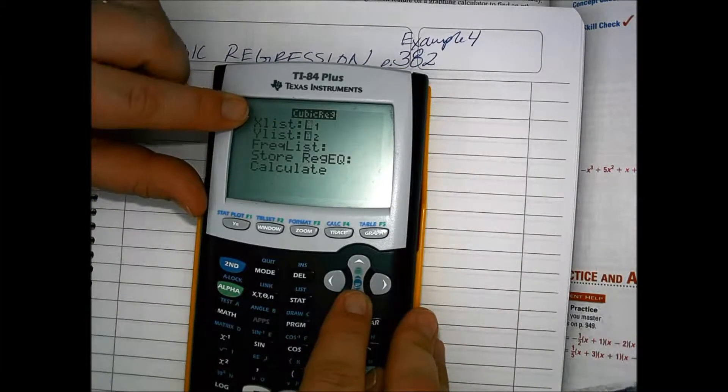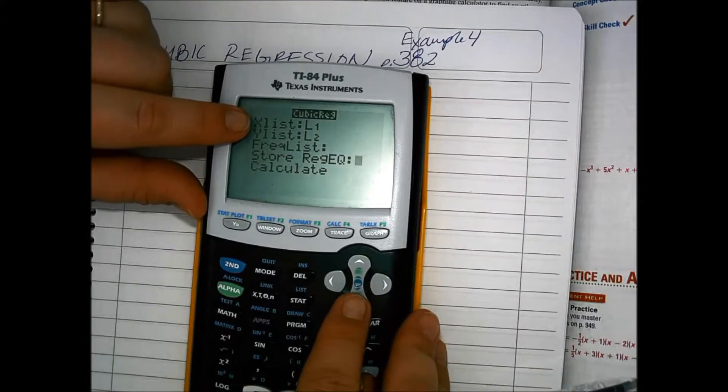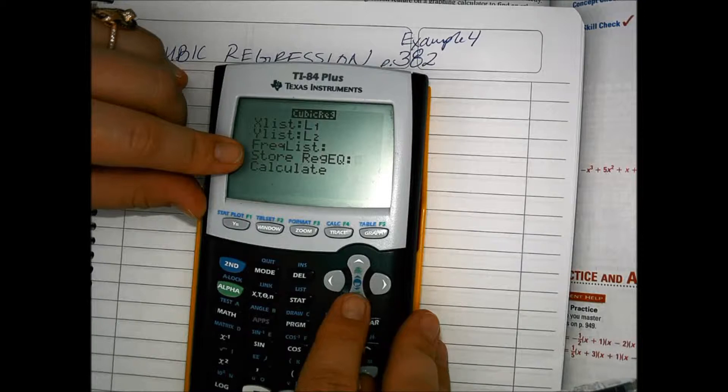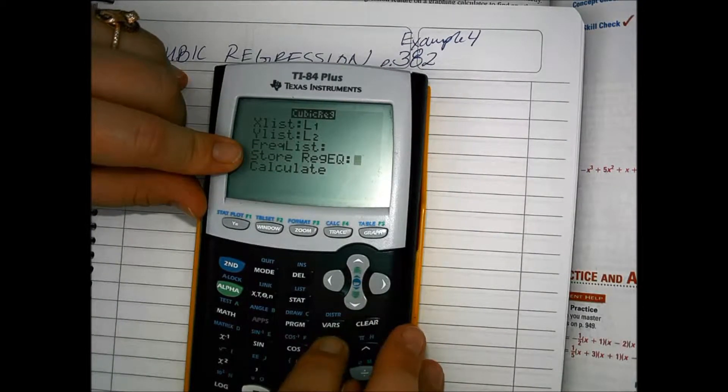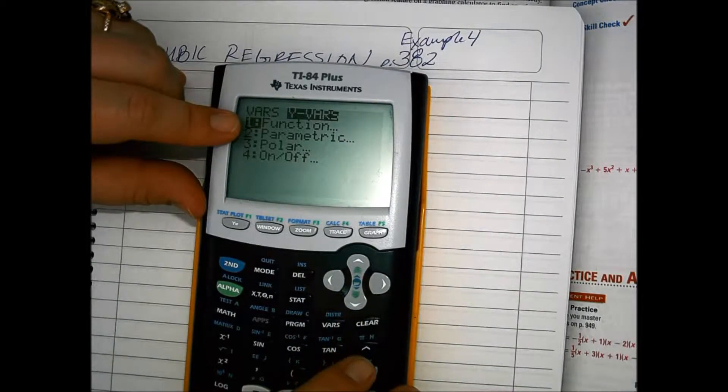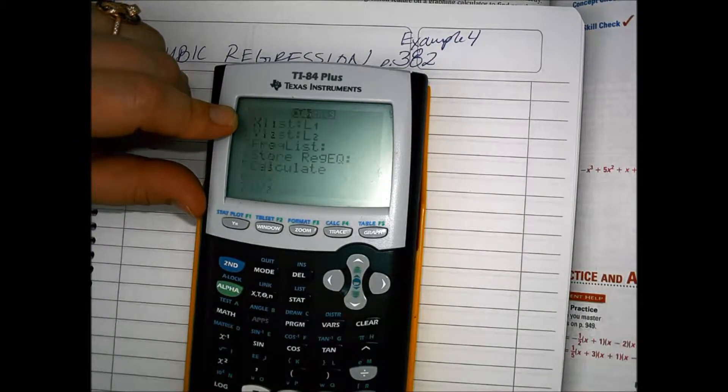Then we have this x list L1, y list L2. That's just telling the calculator what lists to read in our stat data table. For store reg eq, we want that in y1, so to get that, we have to say vars, which stands for variables, then y vars, select over, and then choose the function 1, and then y1.